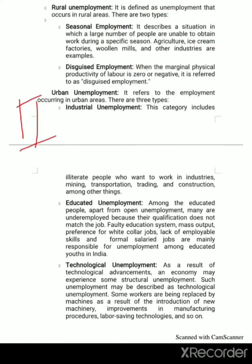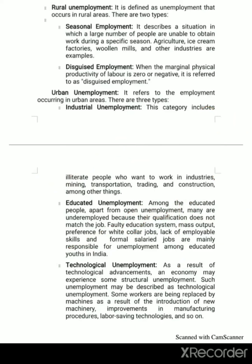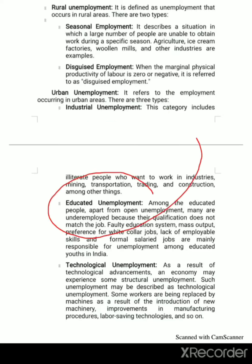The second type of unemployment is urban unemployment. It refers to unemployment occurring in urban areas. There are three types of urban unemployment: the first one is industrial unemployment, the second is educated unemployment, and the third one is technological unemployment.